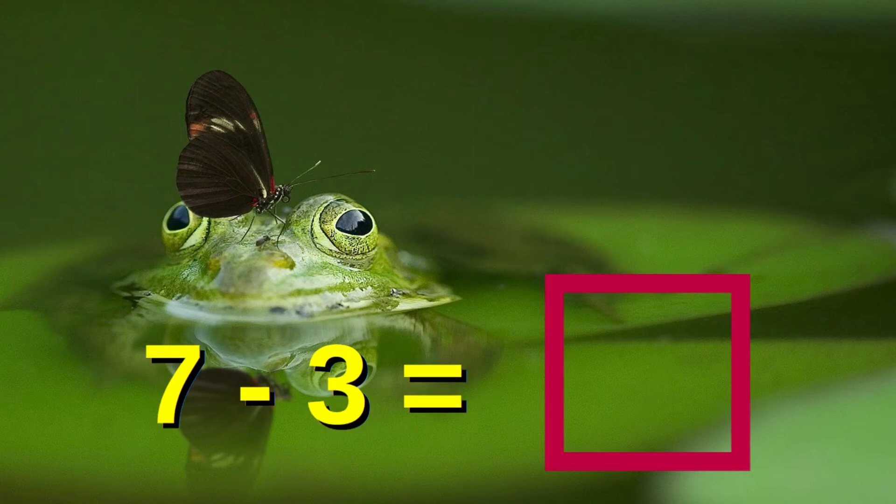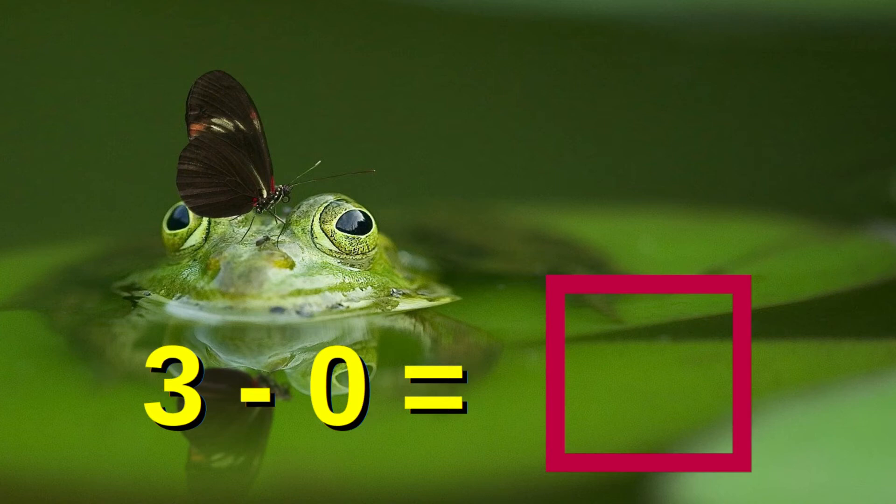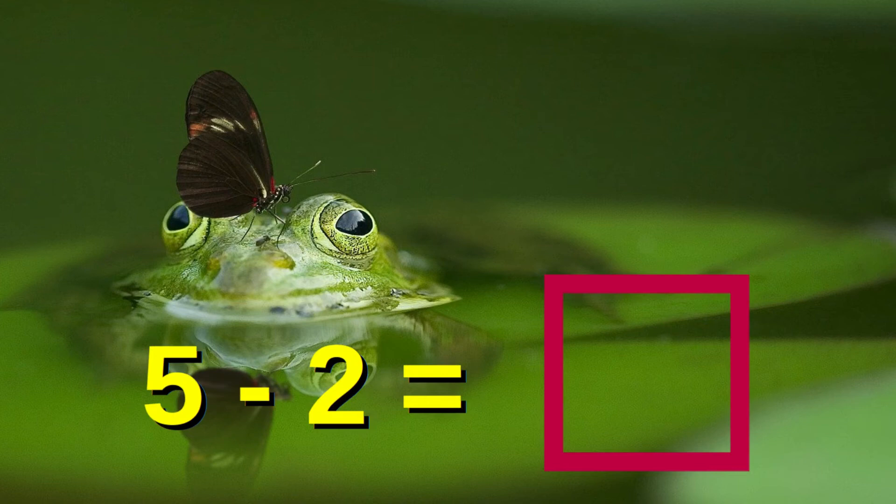7 minus 3 equals 4. 6 minus 2 equals 4. 3 minus 0 equals 3. 5 minus 2 equals 3.